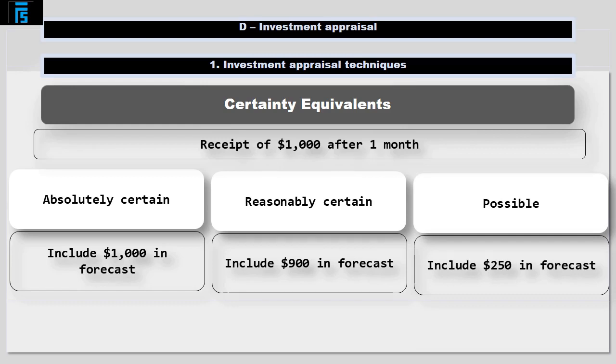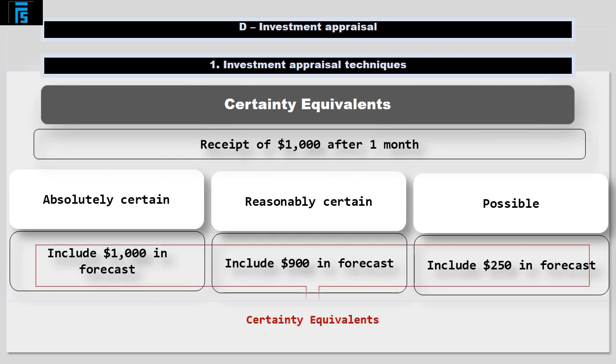In effect, what we are doing here is restating the possible $1000 as a certainty equivalent. For example, we are saying a possible $1000 is worth the same as a certain $900.